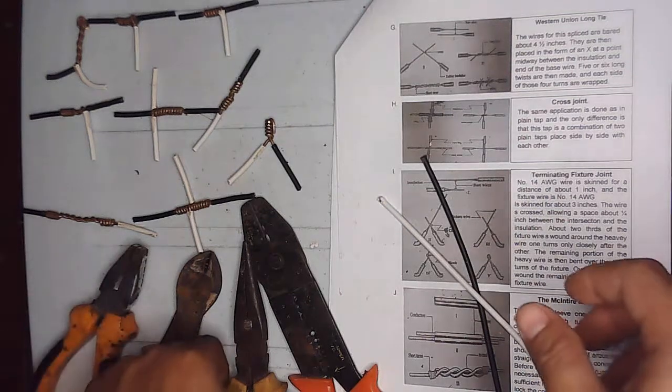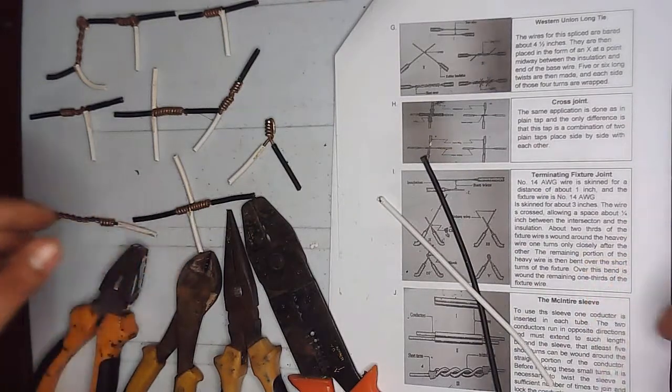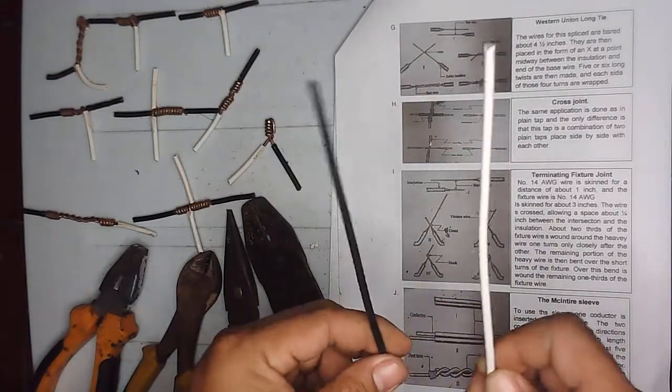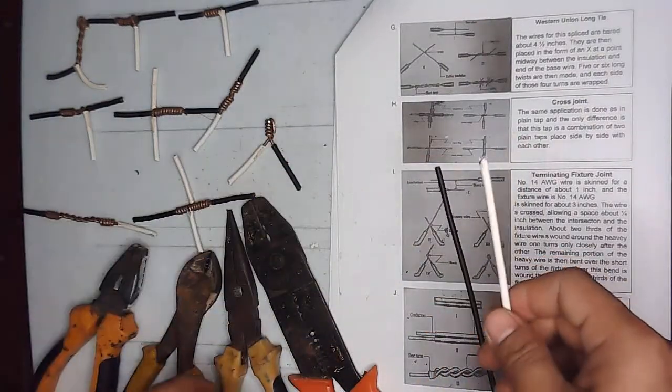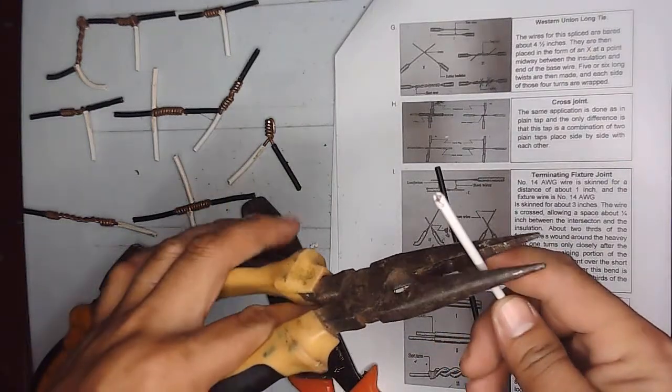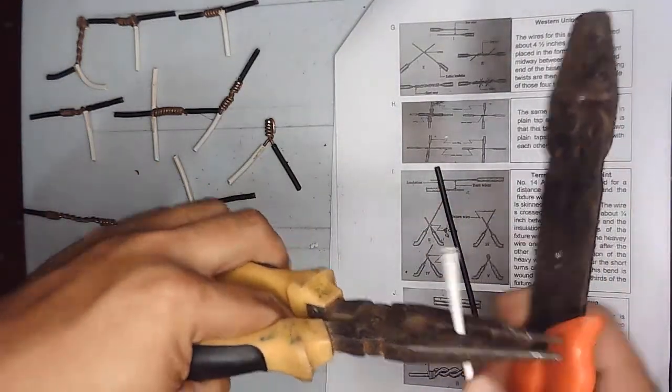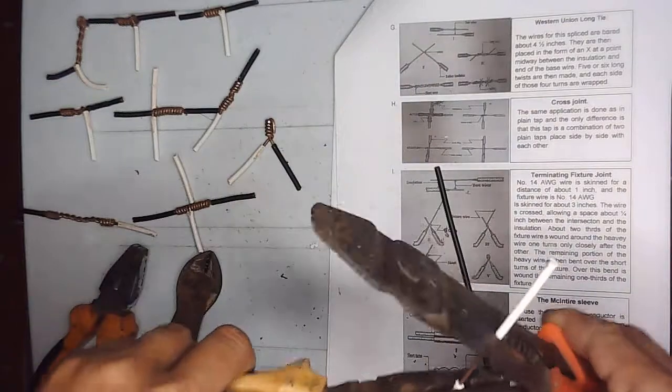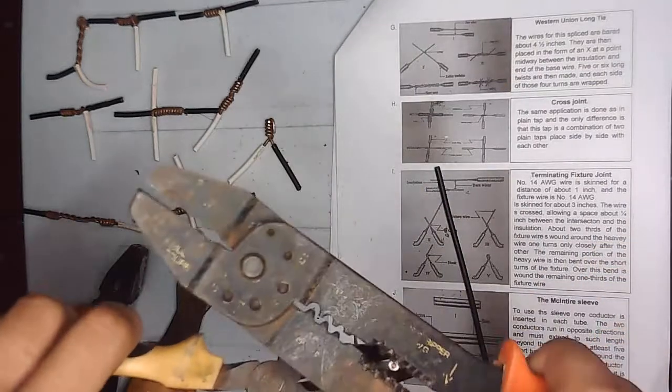Okay, so the next wire splice we will make is the muck entire sleeve. We'll use two wires here with the same length, then afterwards we will strip. For the first end, we'll strip about two inches, and on the other side just about one inch.